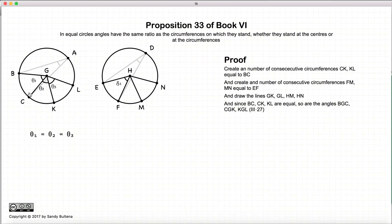Now, BC and CK are equal, which means that theta1 and theta2 are equal. That's from Proposition 27 of Book 3. And of course, CK is equal to KL by design, so theta2 is equal to theta3. Therefore, the total angle for BGL, the angle theta, is equal to N times theta1.